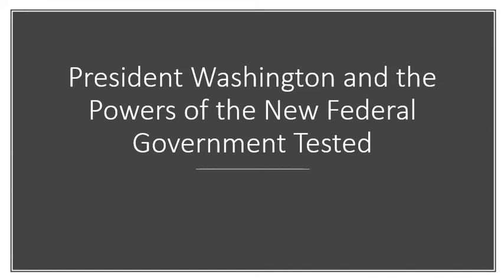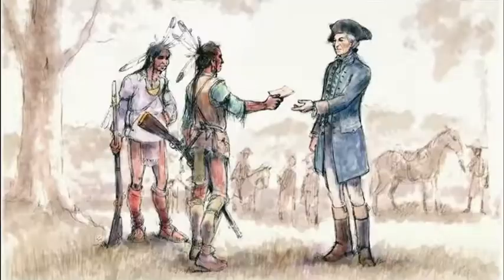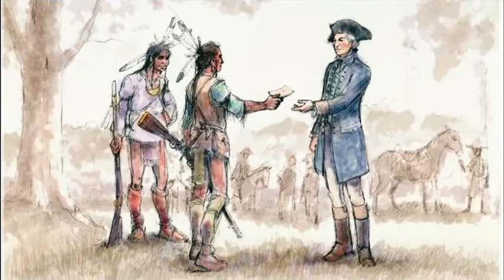Even after the war was over, the British continued to agitate in the west by arming and funding Indian resistance efforts. This was especially true in the Ohio Valley and Great Lakes, the area that made up the Northwest Territory. Washington, in his first term of office, hoped to avoid violent conflict with the western tribes, and to this end he approved Congress's passage of what became known as the Indian Intercourse Act of 1790.